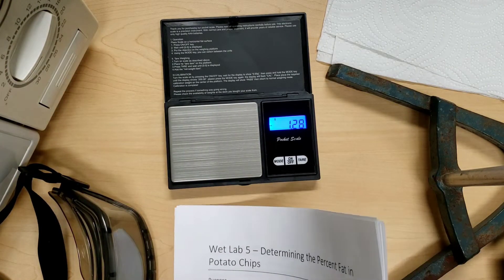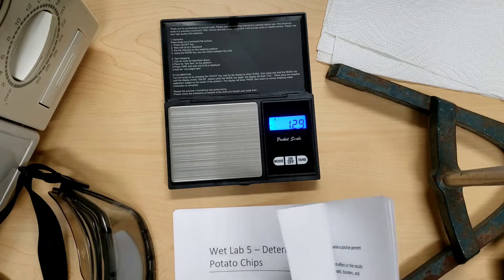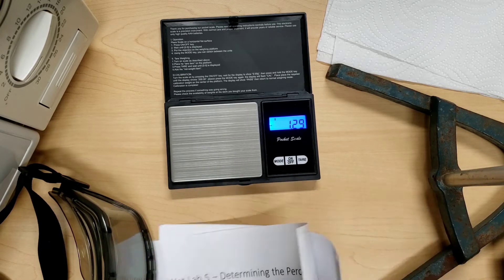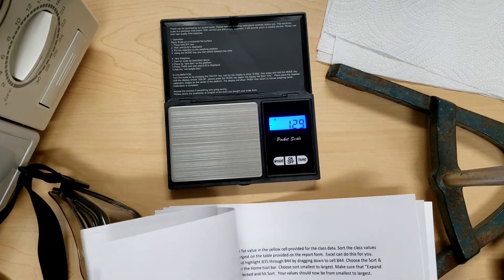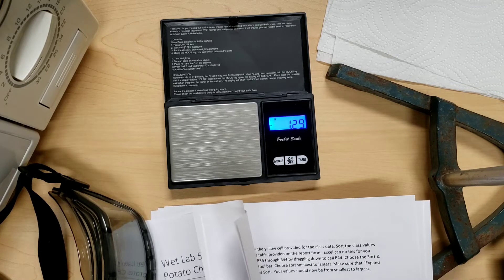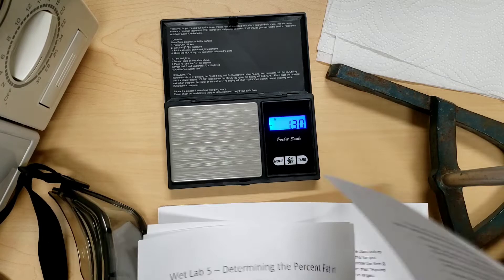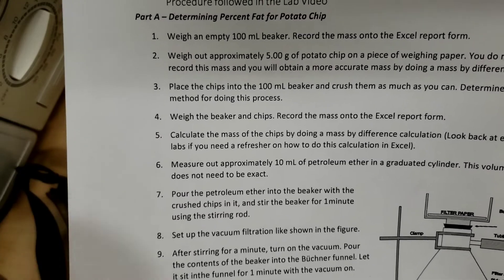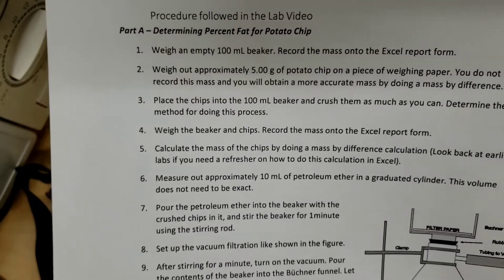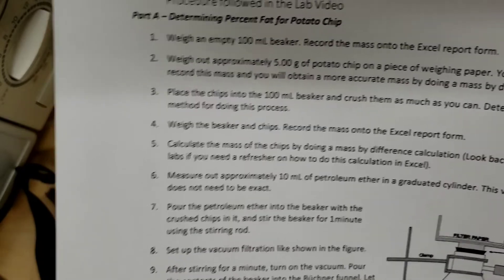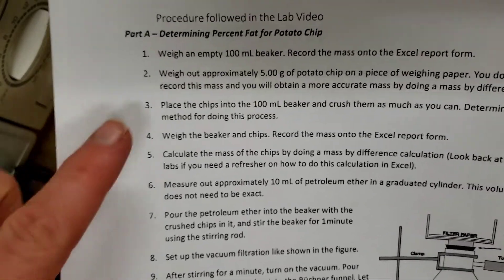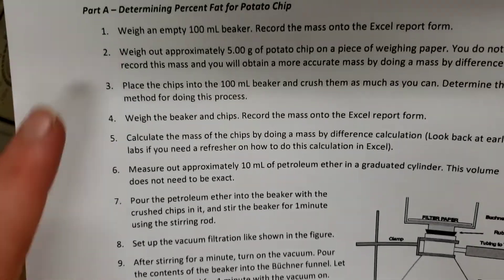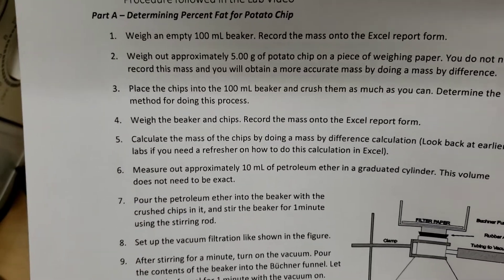So we are going to be looking at two different ways to remove fat from the potato chips. One, we cannot safely do at home because it requires the use of a non-polar solvent called petroleum ether. In the lab, we can use petroleum ether, which is non-polar and dissolves the fat away from the potato chips. There is a video that follows the procedure provided for you in order to compare this method to the one you're going to be doing at home.